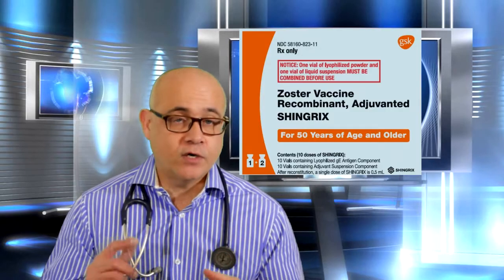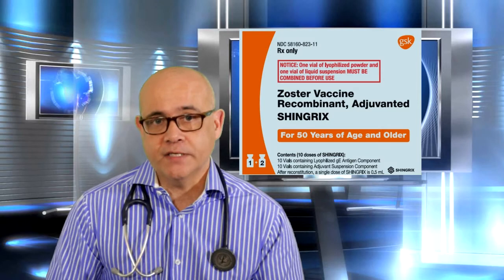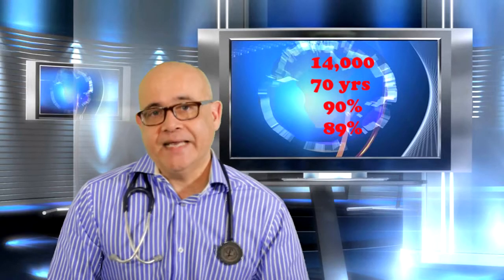Let's talk about our first vaccine, Shingrix, the recombinant zoster vaccine. This was studied in two big trials. In the first trial with over 15,000 people greater than 50 years old, it reduced the risk of developing herpes zoster by 97%. In addition, there were no cases of post-herpetic neuralgia. In the second study with approximately 14,000 people 70 years old or older, it reduced the risk of herpes zoster by 90% and post-herpetic neuralgia by 89%.